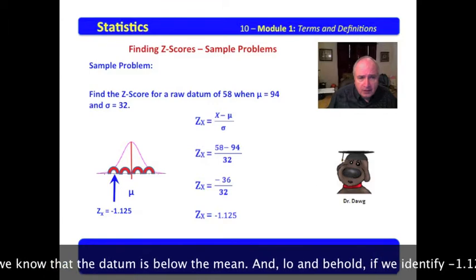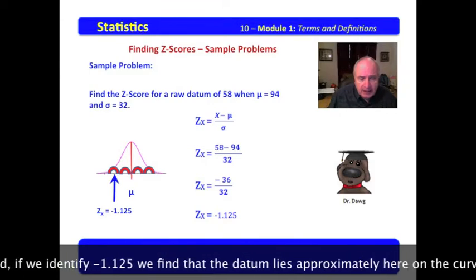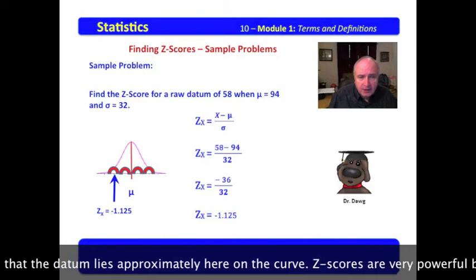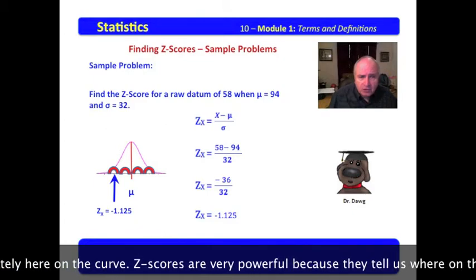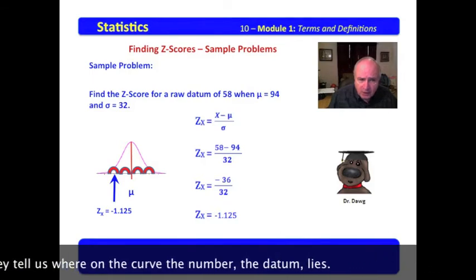And lo and behold, if we identify negative 1.125, we find that the datum lies approximately here on the curve. Z-scores are very powerful because they tell us where on the curve the number, the datum lies.